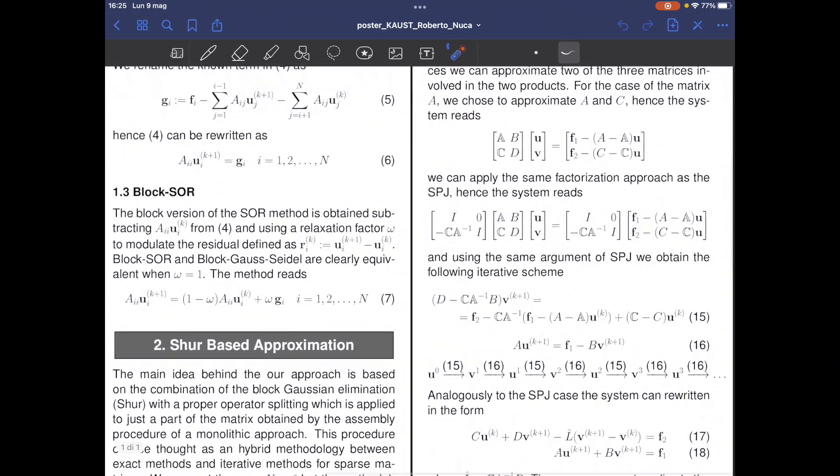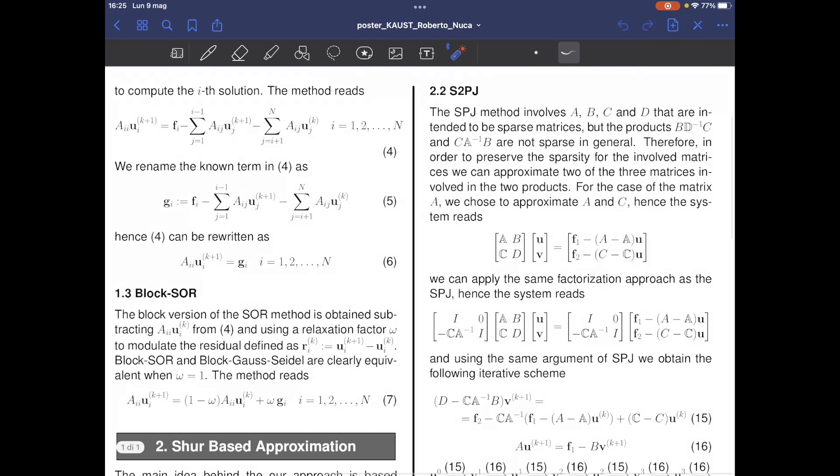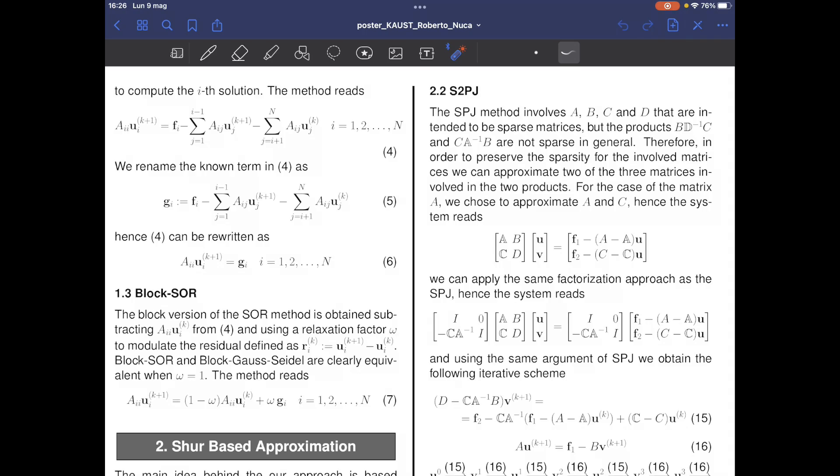We also introduced another version of the algorithm called S2PJ, where two operators instead of one are splitted, and that's also the reason why the number 2 appears in the name. This choice is motivated by the fact that the product of sparse matrices is not sparse in general. The double splittings help to preserve the sparsity pattern of the original matrices because the number of elements in the approximated operators are smaller than the number of elements in the original ones. In particular, for the Jacobi case, the approximations are just diagonal matrices. Hence, the sparsity pattern of L is inherited by the only matrix which is not approximated in the product.